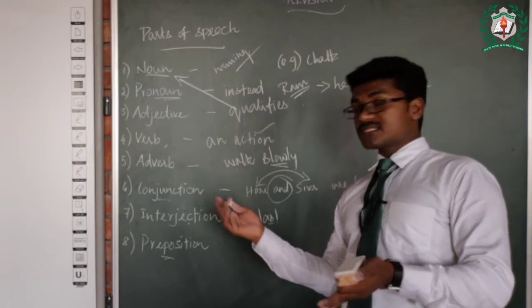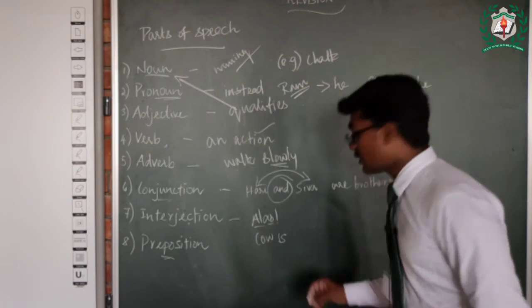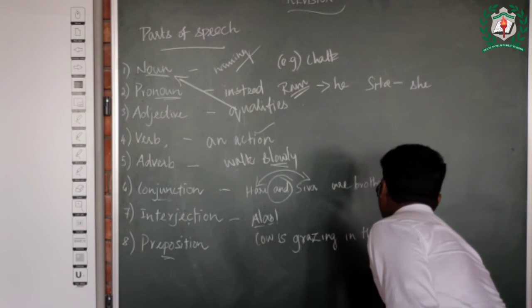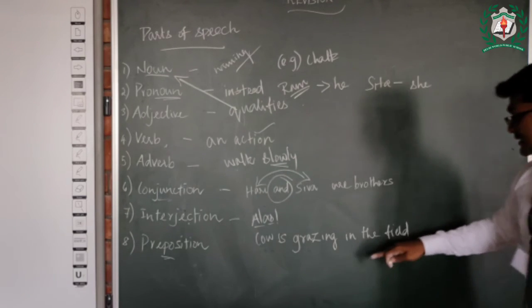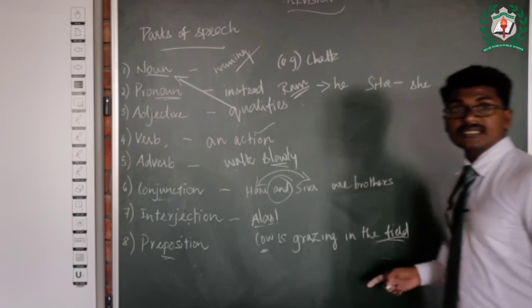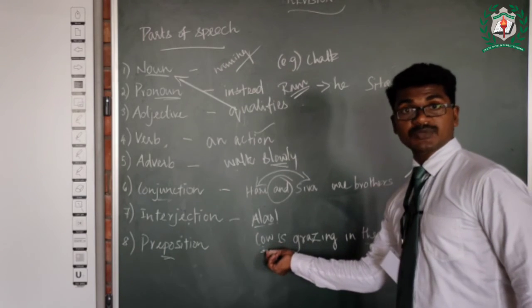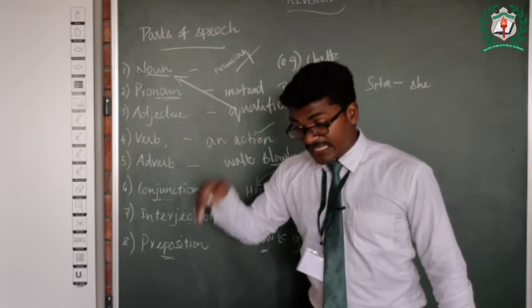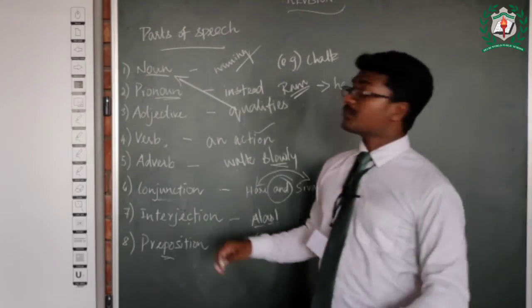Next, preposition. It relates, it creates a relationship between noun or pronoun with the other statement. Example, cow is grazing in the field. Now we have to see, the cow, it is grazing in the field. It creates a relationship between cow and the other part of the sentence. Now see, it creates a relationship between cow and field, that is 'in'. Cow is grazing in the field. So in that way the preposition acts. It creates the relationship.